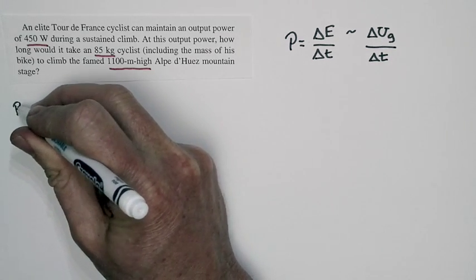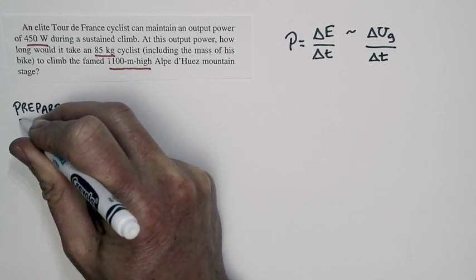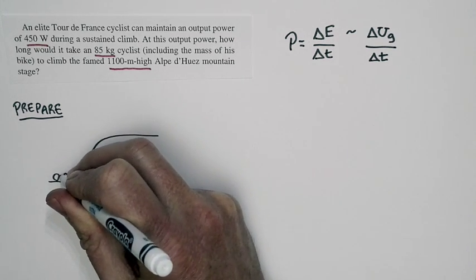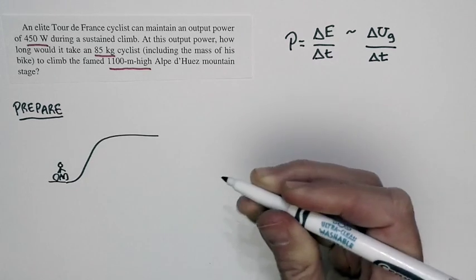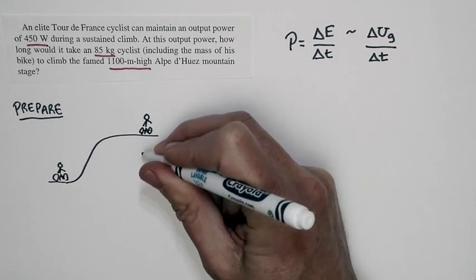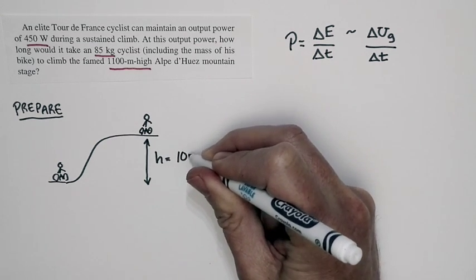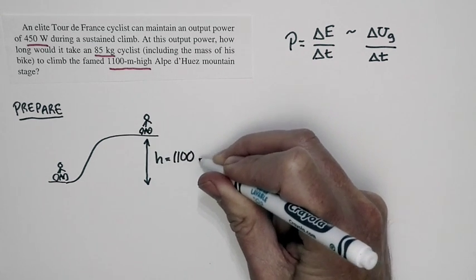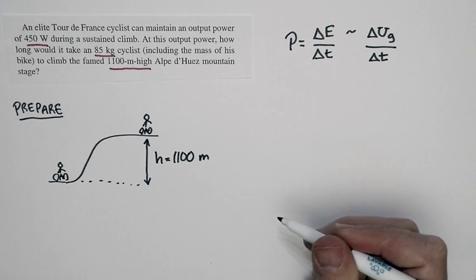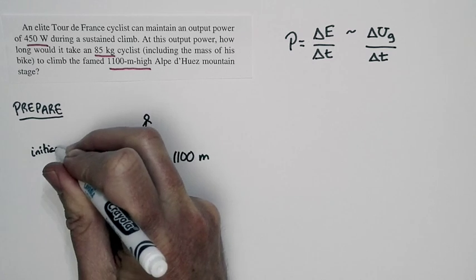Our preparation step then reduces to this: What are we going to call the initial and final states? The initial state is just going to be the cyclist at the bottom of the mountain. So here's our cyclist at the bottom of the mountain. Our final state is the cyclist at the top of the mountain. In between time, the cyclist has increased his height by a distance of 1,100 meters. So that's the height from the start to the finish. We can take this point as the zero of our potential energy. So here's our initial, here's our final.